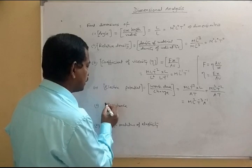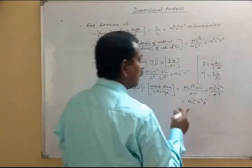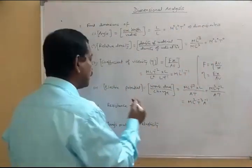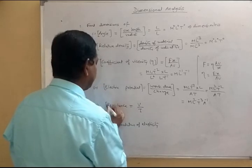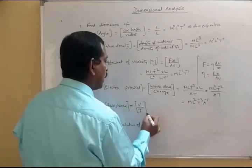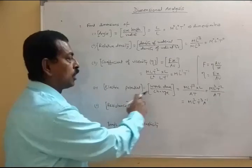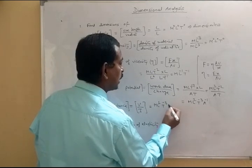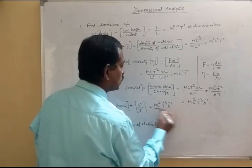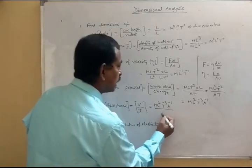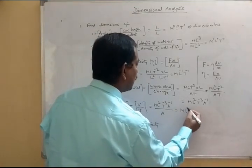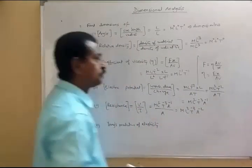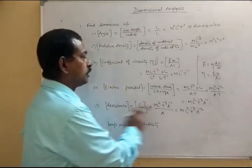Next is resistance. The resistance term comes from Ohm's law: V = Ri. So R = V/i. The dimension of potential we have already derived as M L² T⁻³ A⁻¹. Dividing by current A gives M L² T⁻³ A⁻². This is the dimension of resistance.